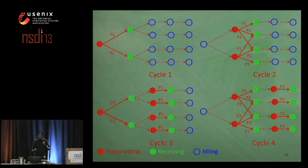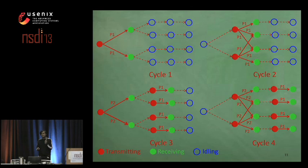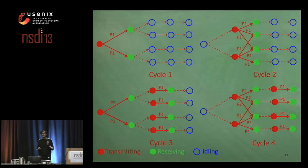Once the pipeline is filled, except the root node which only transmits, any other node in the network is busy at all times — it is either transmitting or receiving a packet at any given point of time.